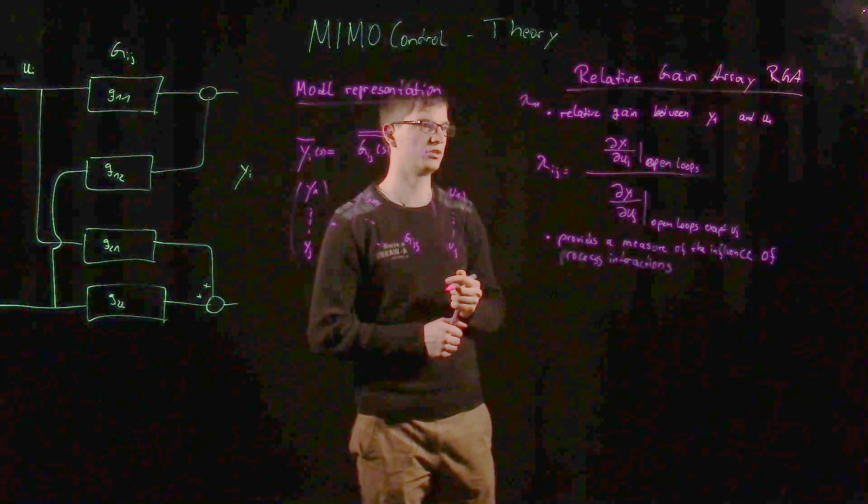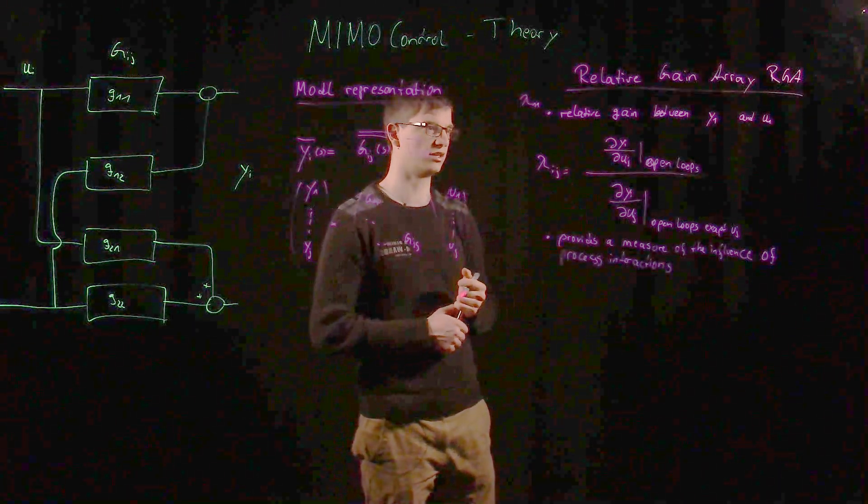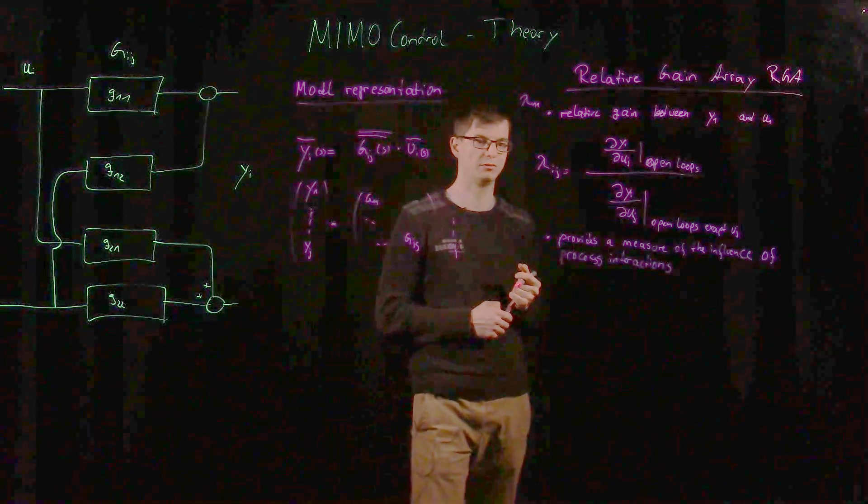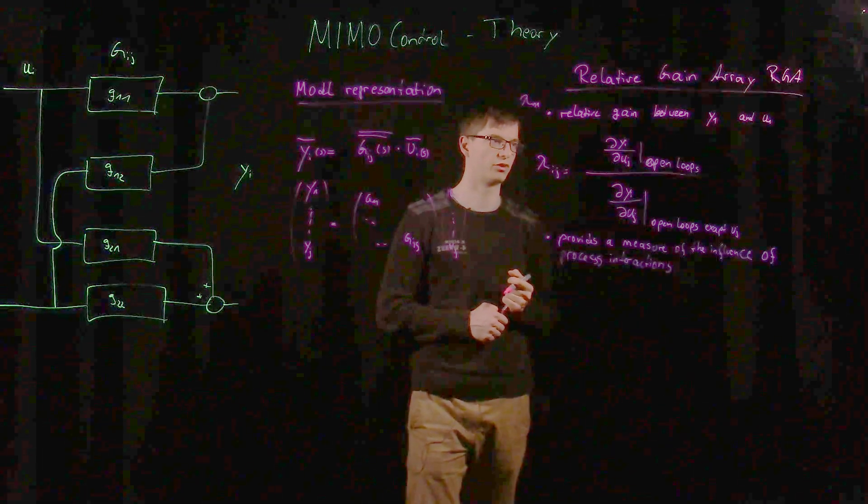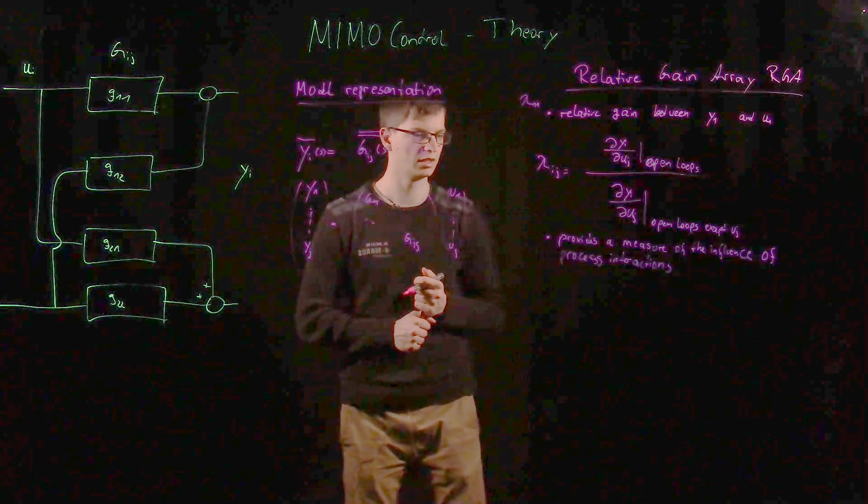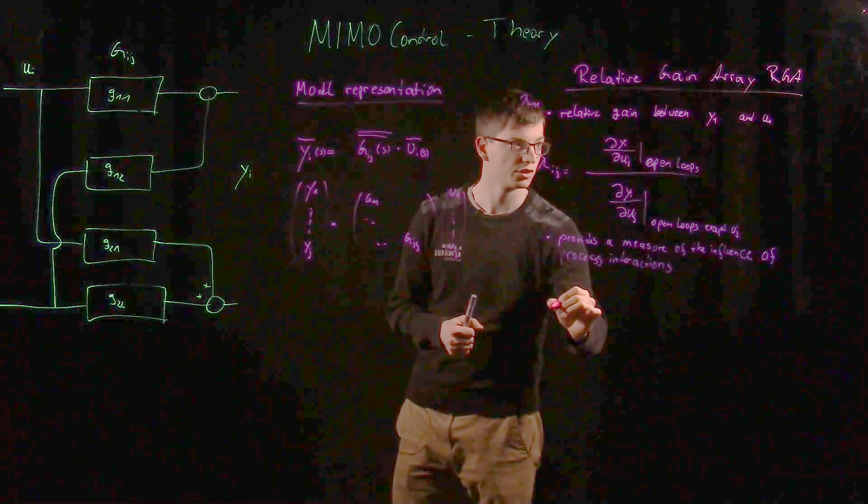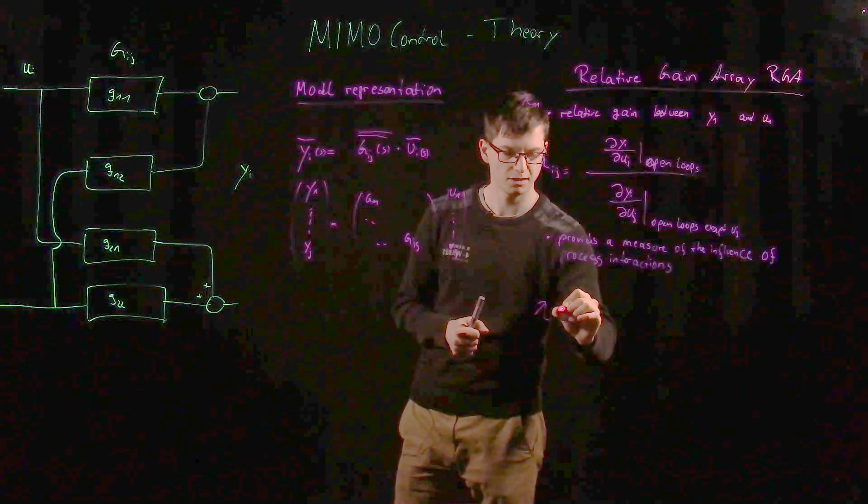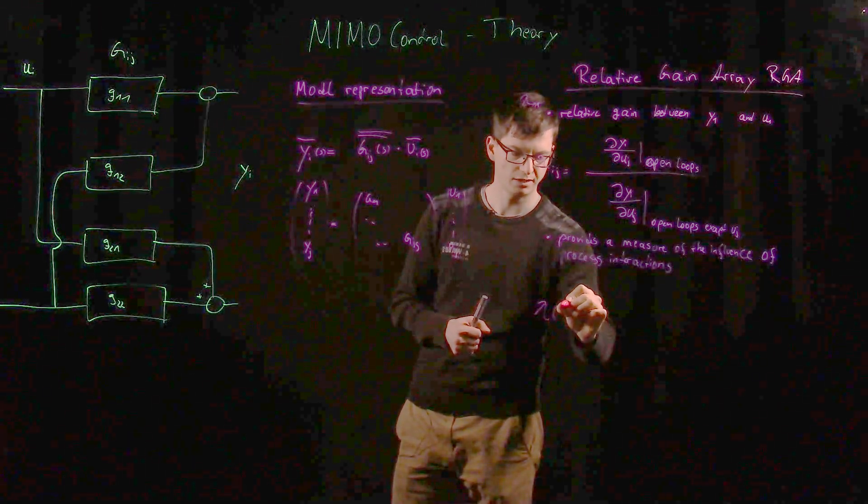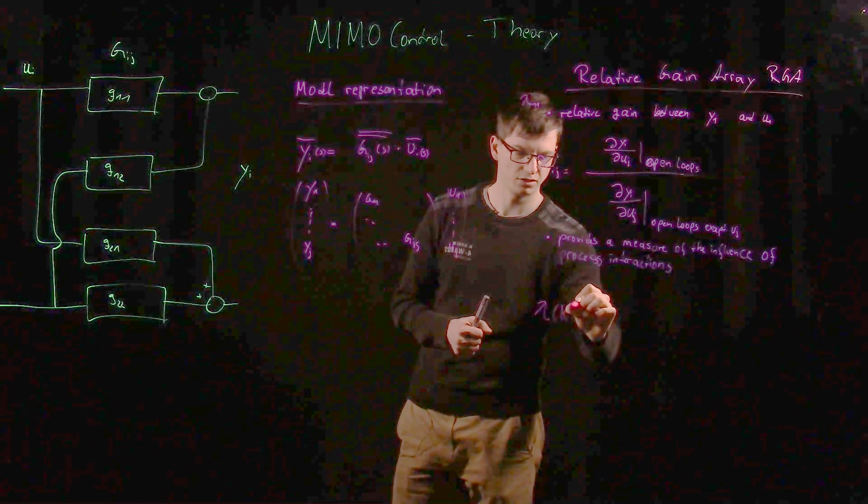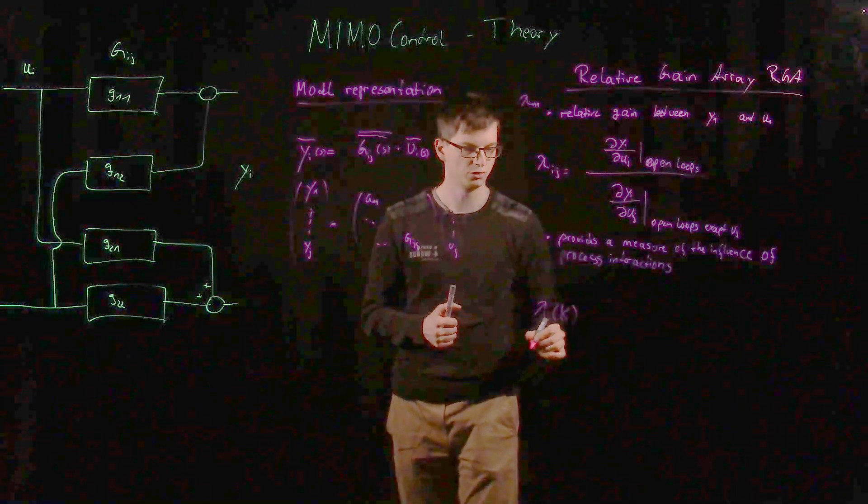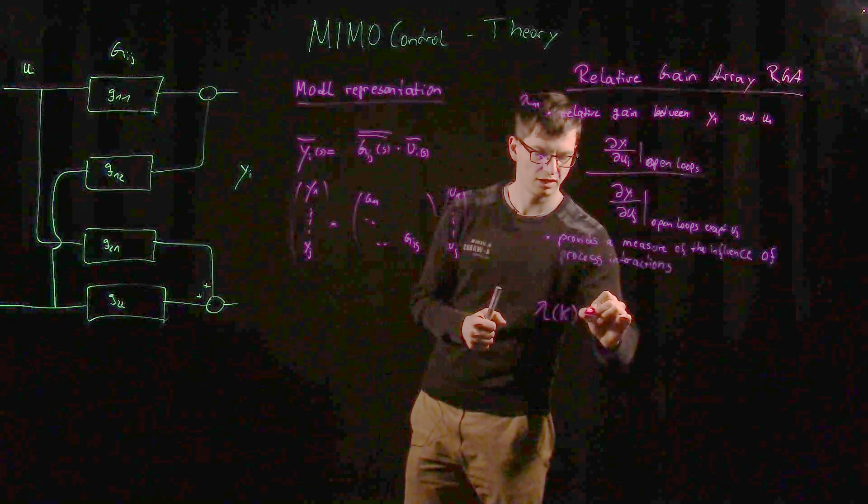We can calculate this lambda differently. This is the pure mathematical definition, but in real life we would perform another way. We would use the following calculation: lambda is dependent from a variable that we will consider soon. It's dependent from k.